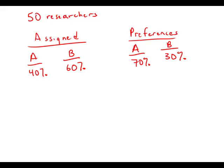Of the 50 researchers in a work group, 40% will be assigned to team A and the remaining 60% to team B. However, 70% of the researchers prefer team A and 30% prefer team B. What is the lowest possible number of researchers who will not be assigned to the team they prefer? So first of all, let's focus on...